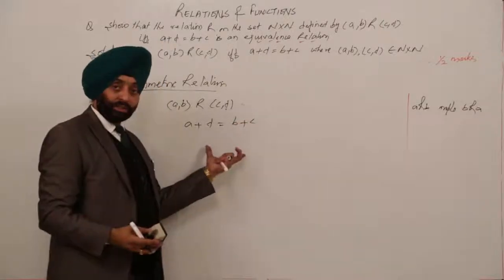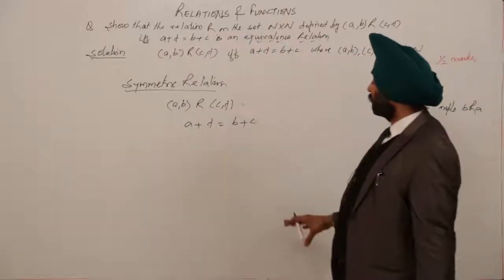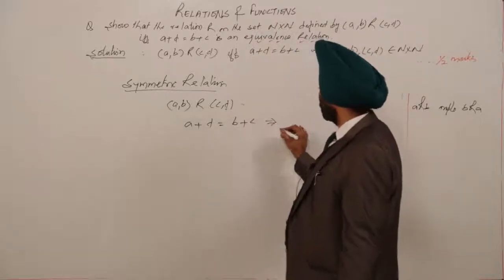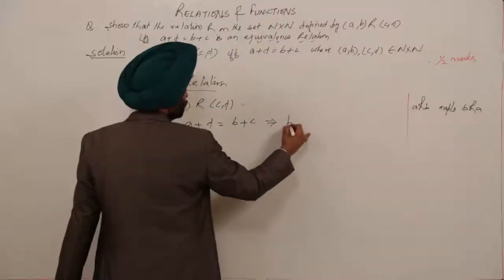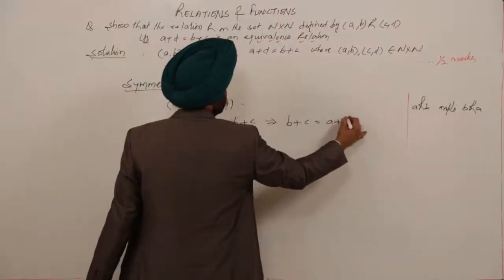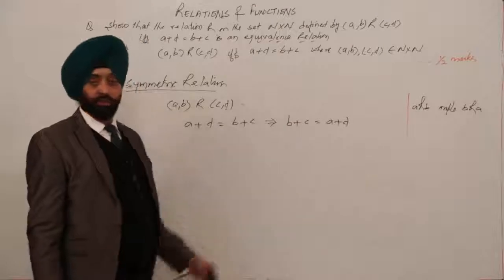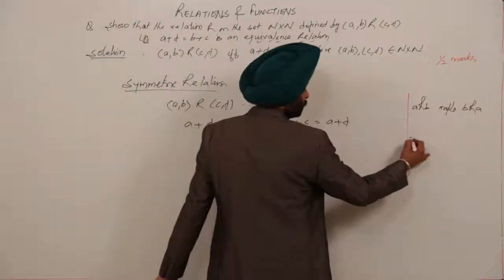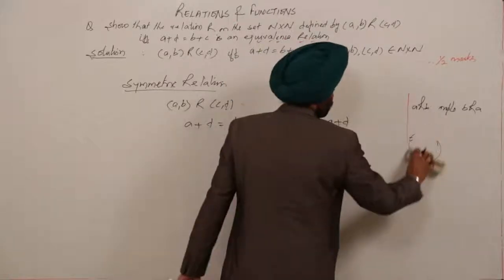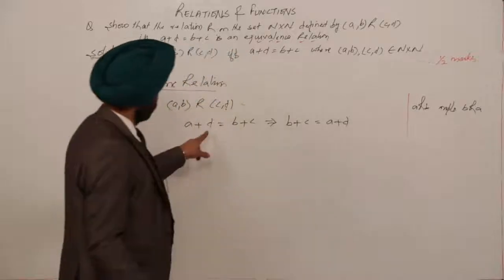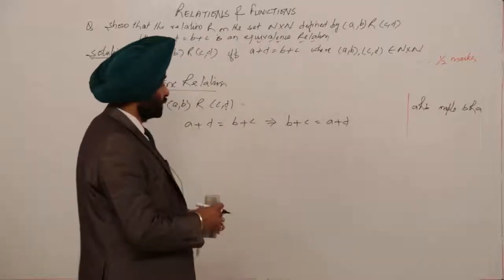From the condition a+d = b+c, we need to prove (c,d) R (a,b). We can write a+d = b+c as b+c = a+d — algebraically, if x=y then y=x, one and the same thing.